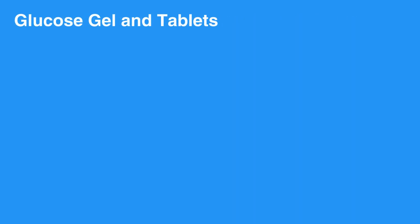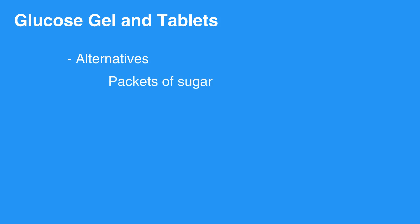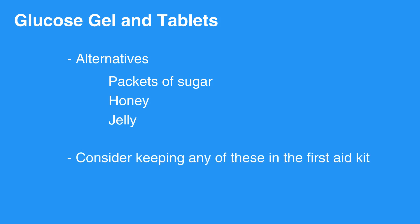Glucose gel and tablets are available and a good way to quickly increase blood sugar. Alternatives to gels and tablets include packets of sugar, honey, or jelly from restaurants, which may be readily available. Consider keeping any of these in the first aid kit.